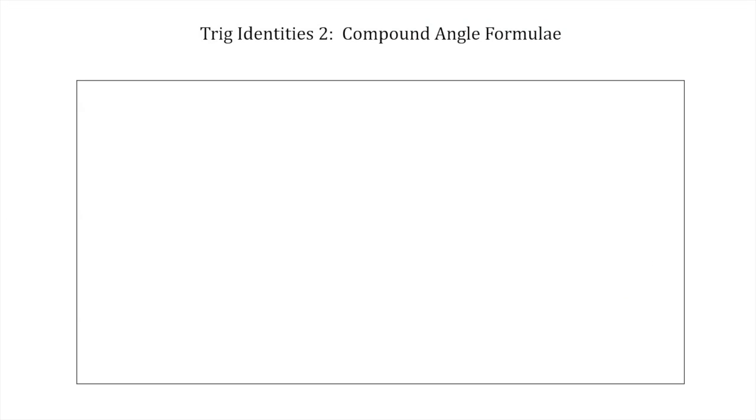In this video, the second in this series on trigonometric identities, we're going to look at identities that involve compound angles — that is, the sum or difference of two angles or two numbers inside a trigonometric function. These are called compound angle formulae.